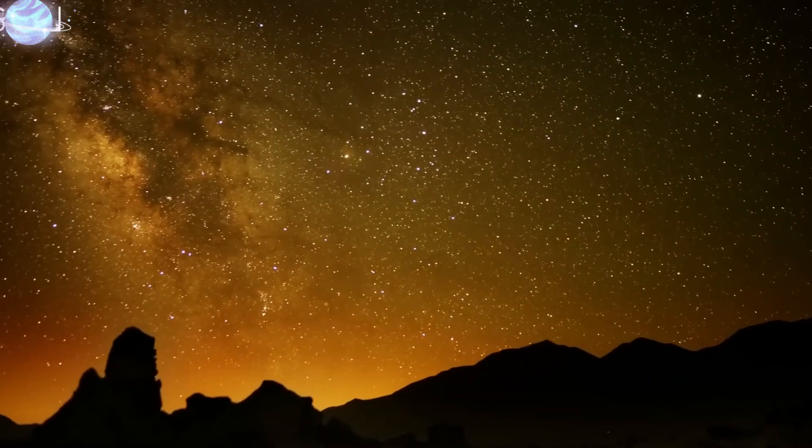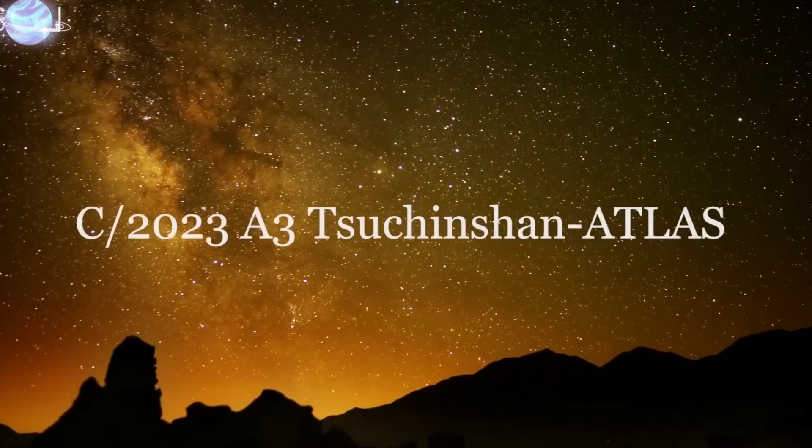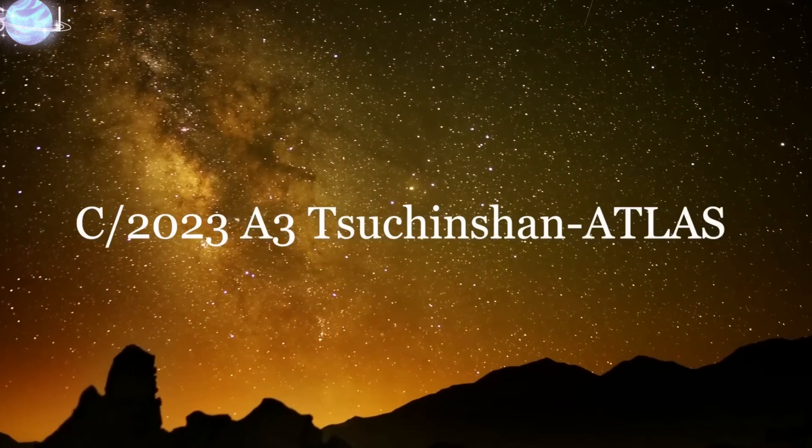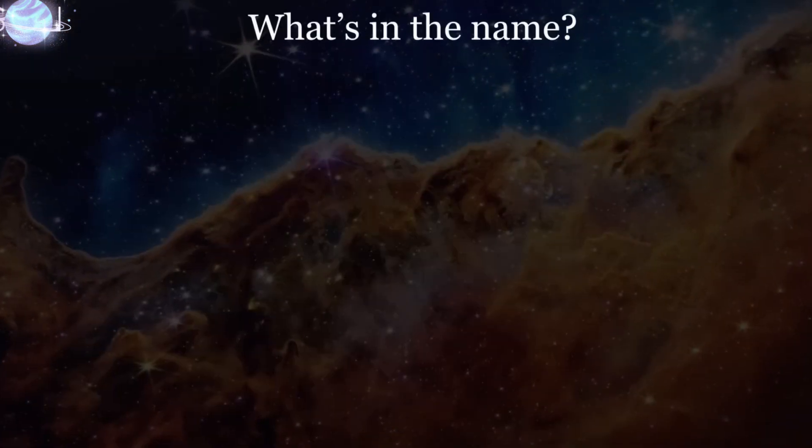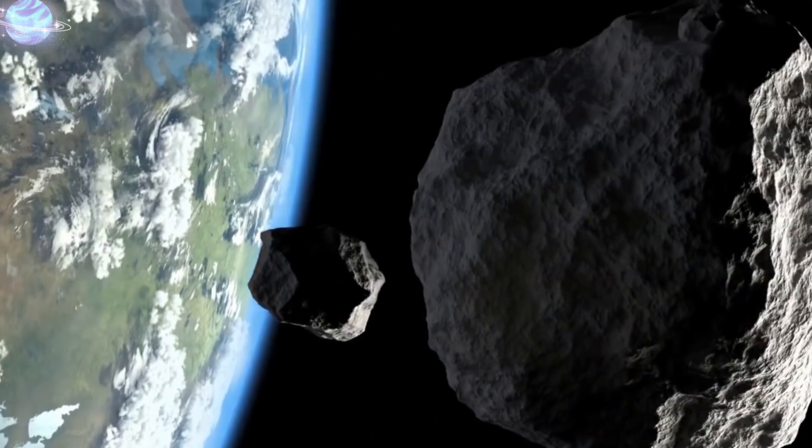Some experts believe Earth used to have a ring system a long time ago. A Mars-sized object might have collided with our home planet, which probably created a dense ring of debris around it. Some scientists think that this debris formed not a ring, but what we know today as the moon.